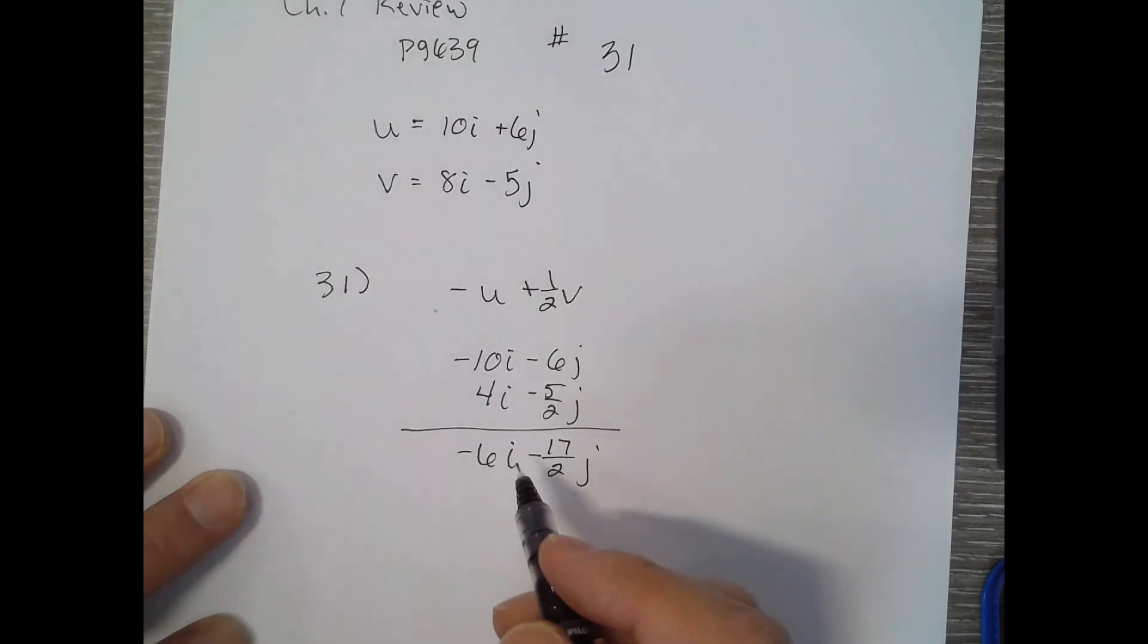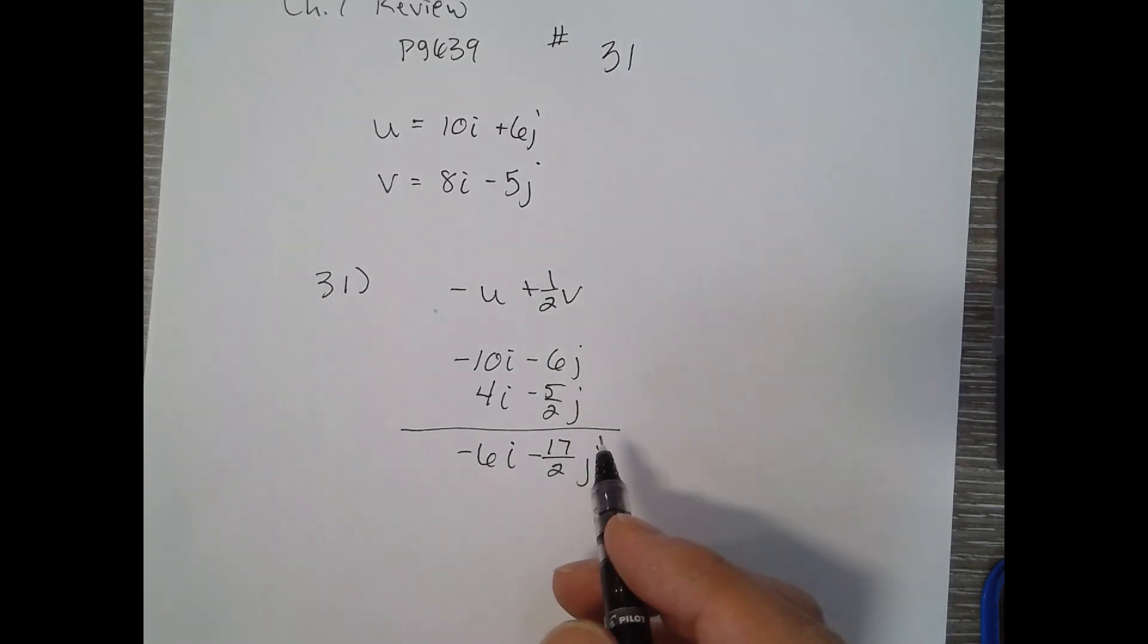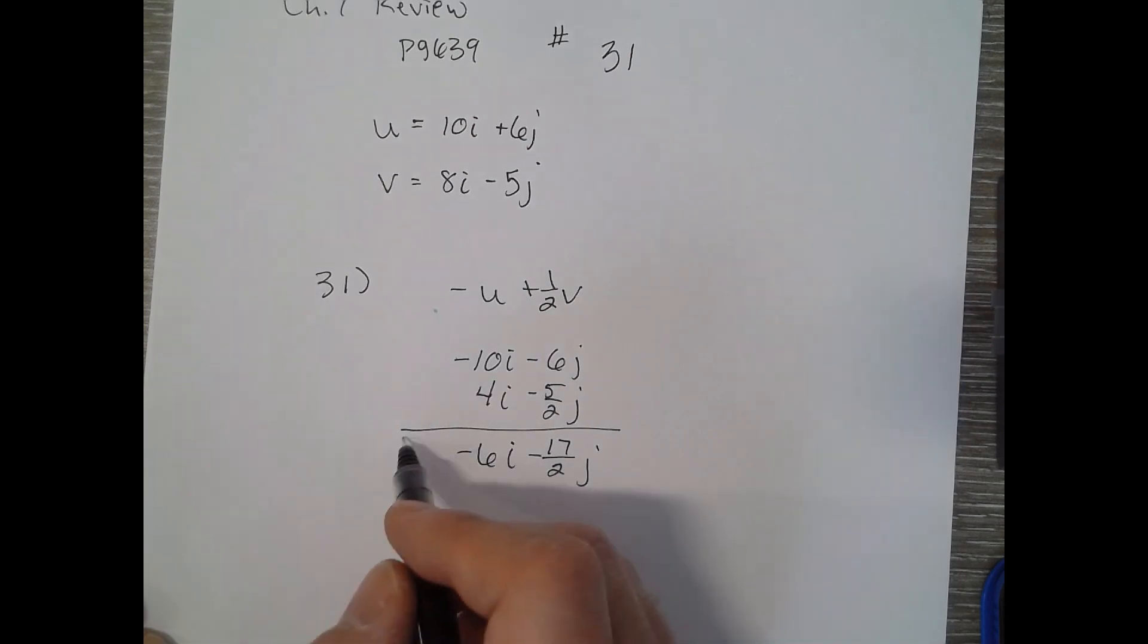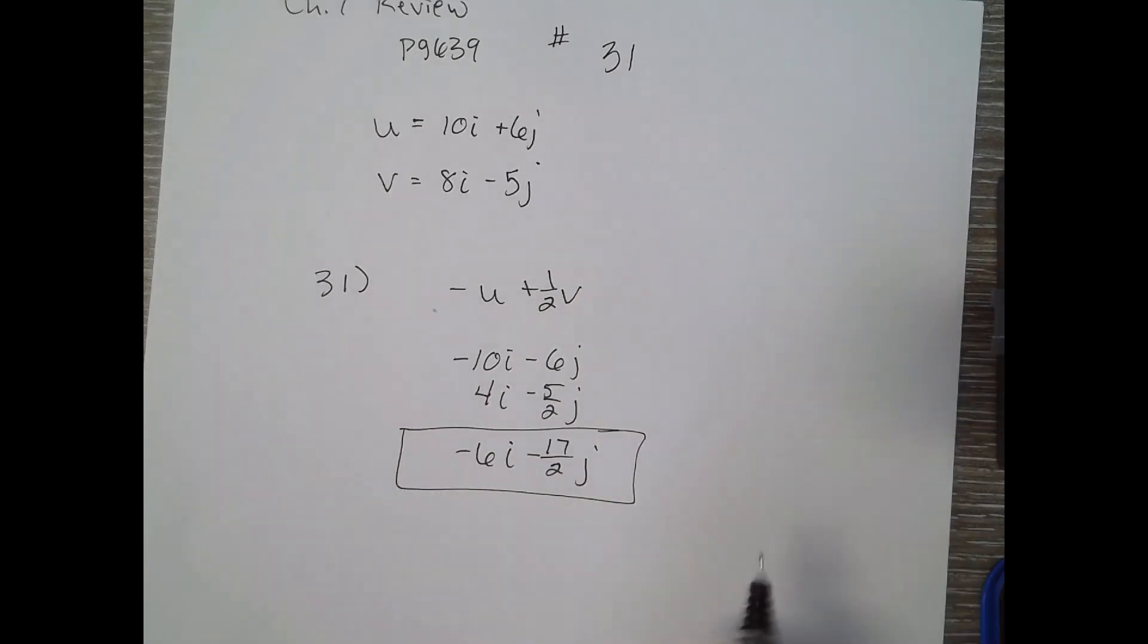That would be our... I guess that's all we have to do, perform the indicated operation. So there's our resultant vector.